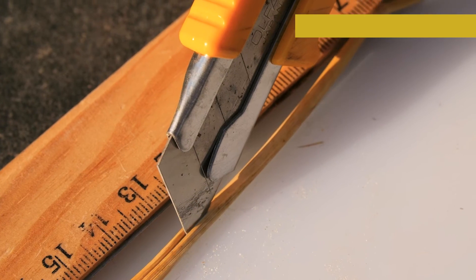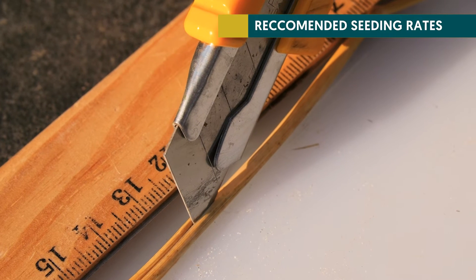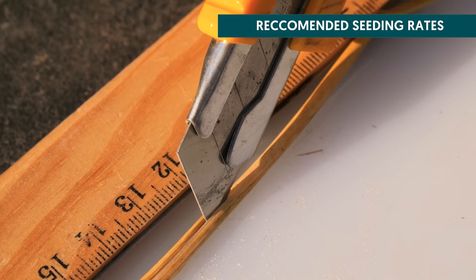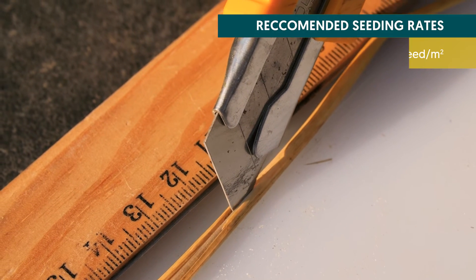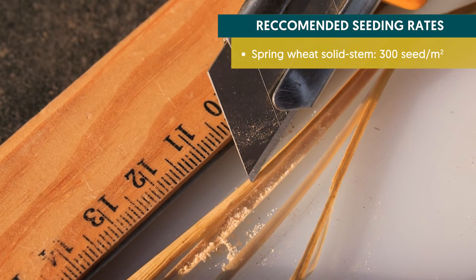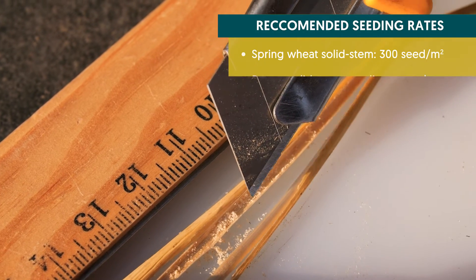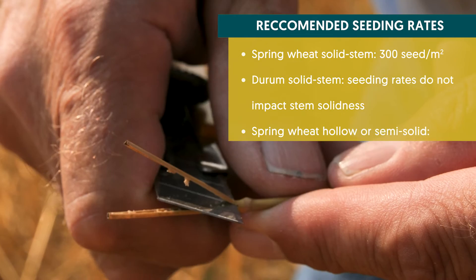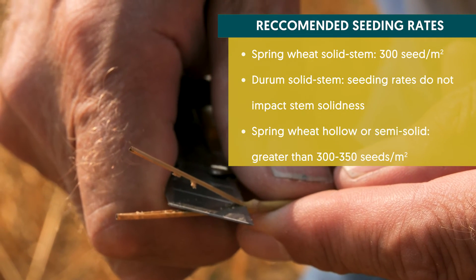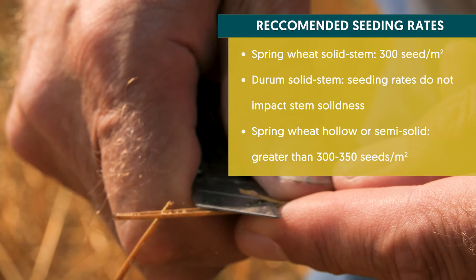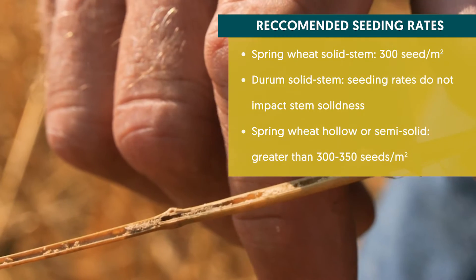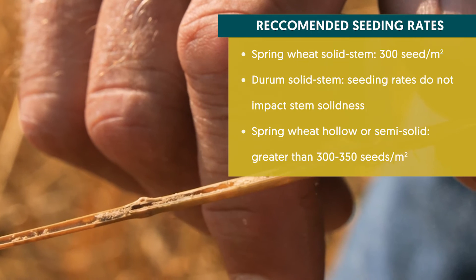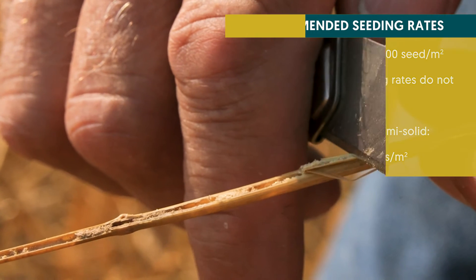Seeding rates for solid stem wheats should be somewhere around 30 plants per square foot, not higher. You can go higher with hollow stem varieties because you're diluting out the impact of the sawfly.